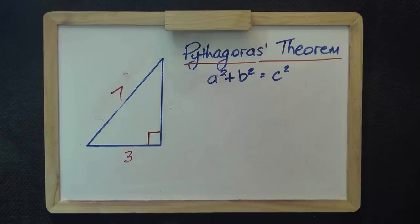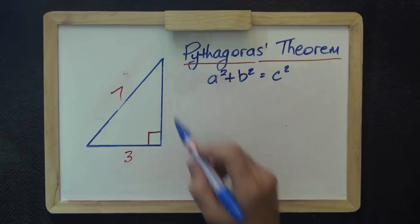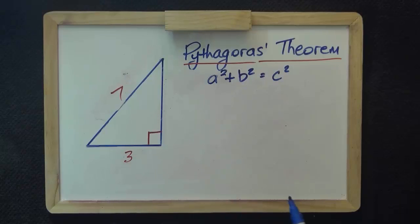For another example, I have a right triangle, hypotenuse is 7, base is 3.